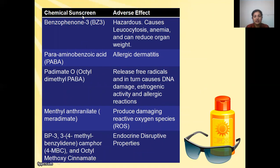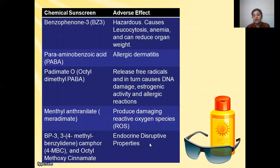Many chemical sunscreen agents are associated with adverse effects. Benzophenone-3 (BP3) is hazardous — it causes glucocytosis, anemia, and can reduce organ weight. Para-aminobenzoic acid (PABA) causes allergic dermatitis. Padimate O, or octyl dimethyl PABA, releases free radicals instead of scavenging them, causing DNA damage and allergic reactions. Menthyl anthranilate, also called meradimate, produces damaging ROS species. BP3, 4-methylbenzylidine camphor, and octyl methoxycinnamate (OMC) exhibit endocrine-disrupting properties, basically disturbing the hormonal balance of the body.